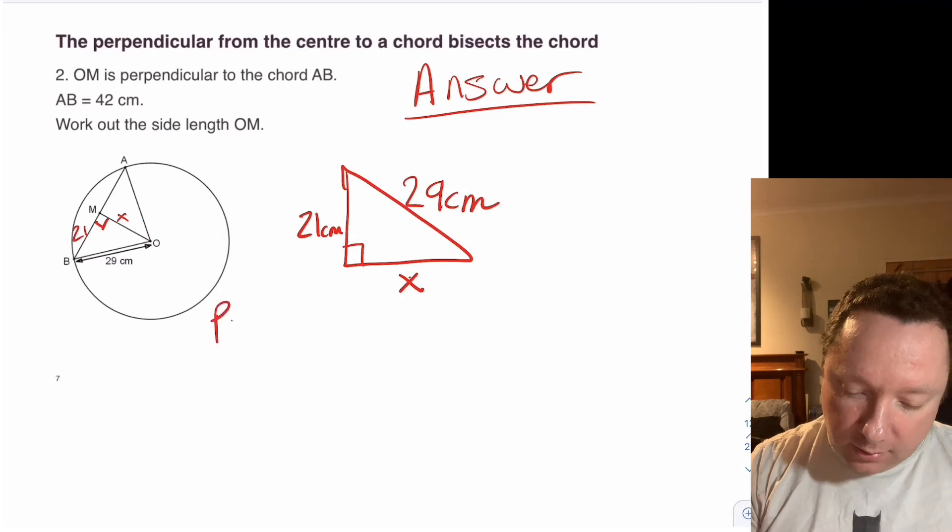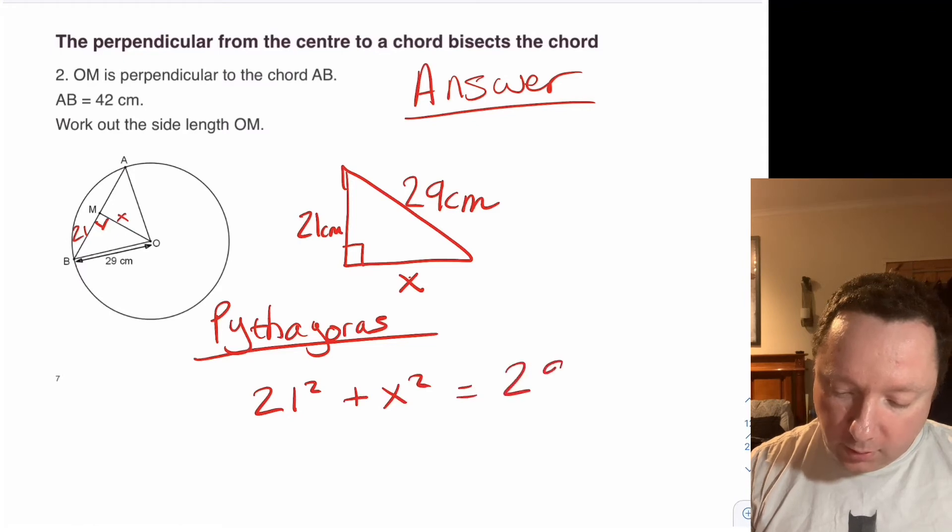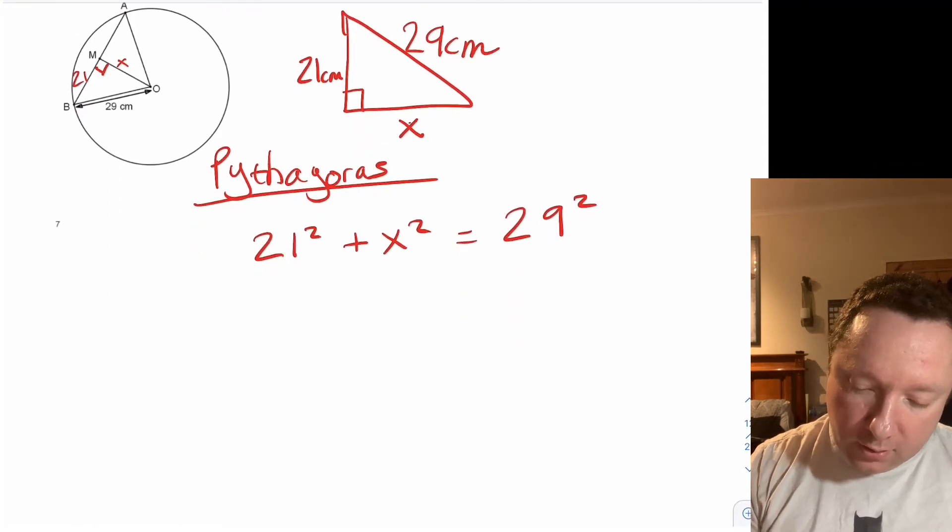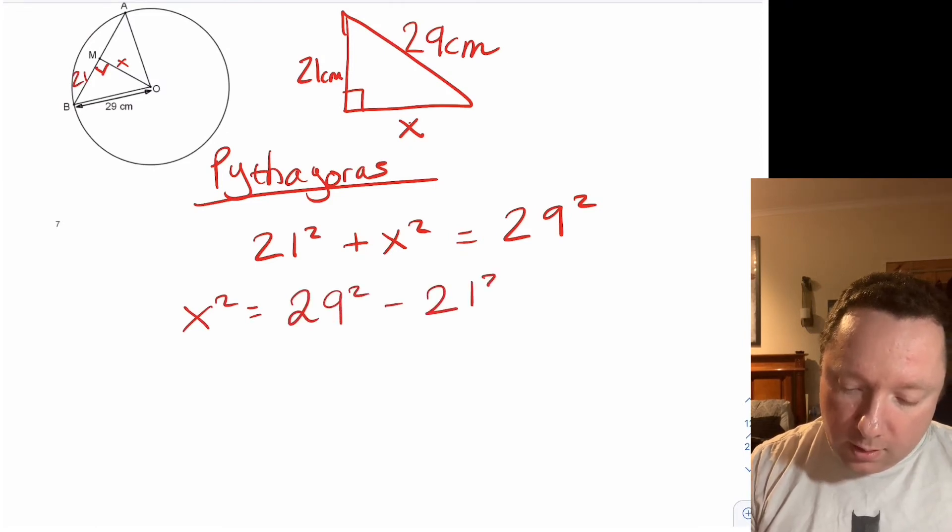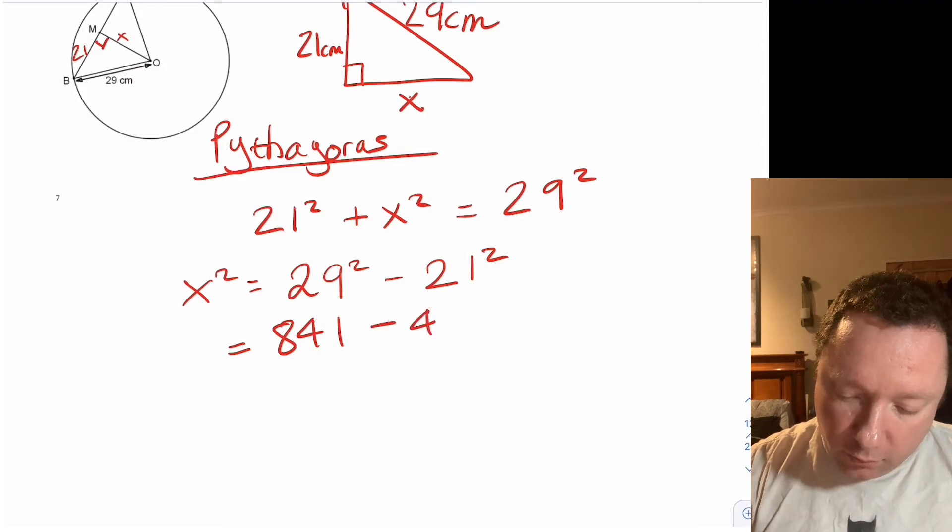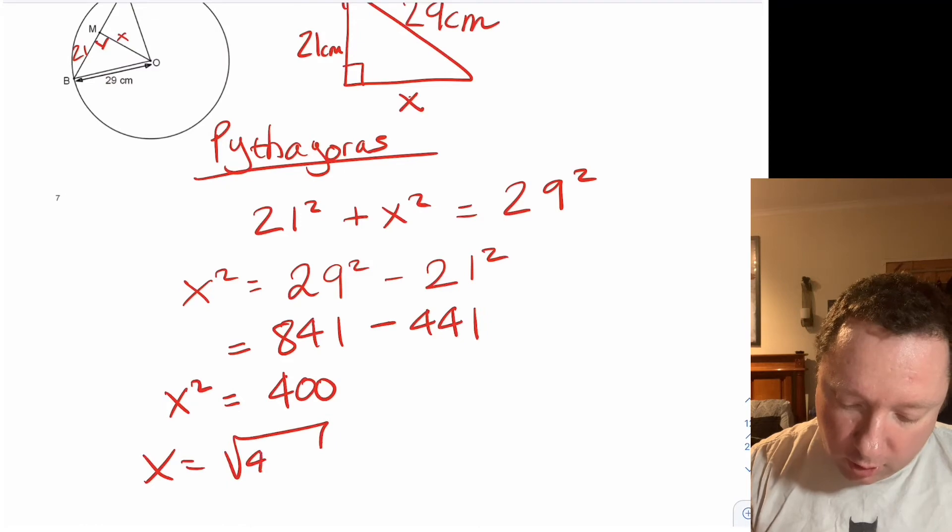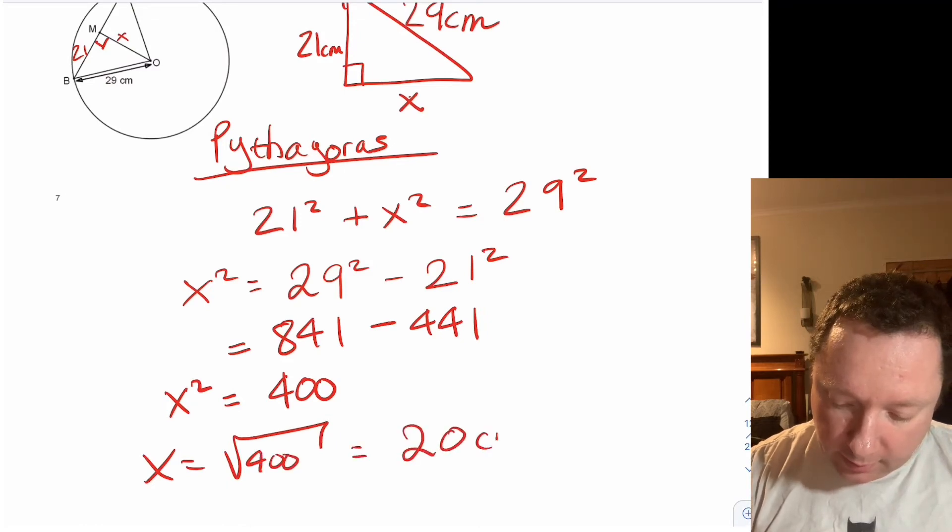So by Pythagoras we know that 21 squared plus X squared equals 29 squared. So I'm going to have to take away. So X squared is 29 squared minus 21 squared. 29 squared is 841. 21 squared is 441. So that equals 400. Which means X being the square root of 400 is 20 centimetres exactly.